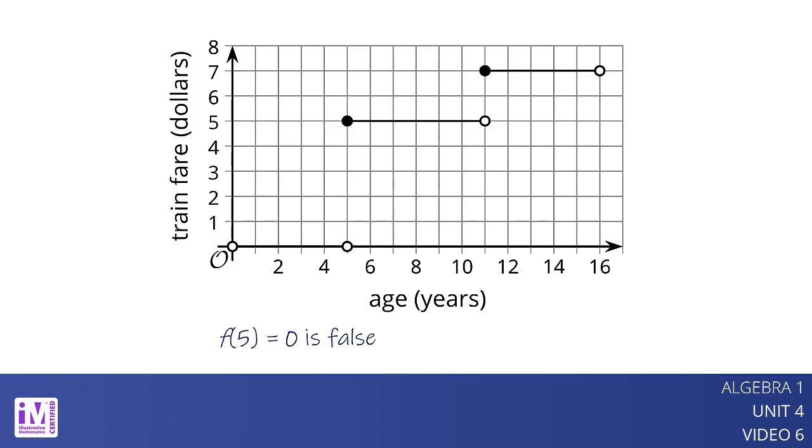On the graph, the point 5 comma 0 is marked with an open circle to indicate that it is not included in the first segment.